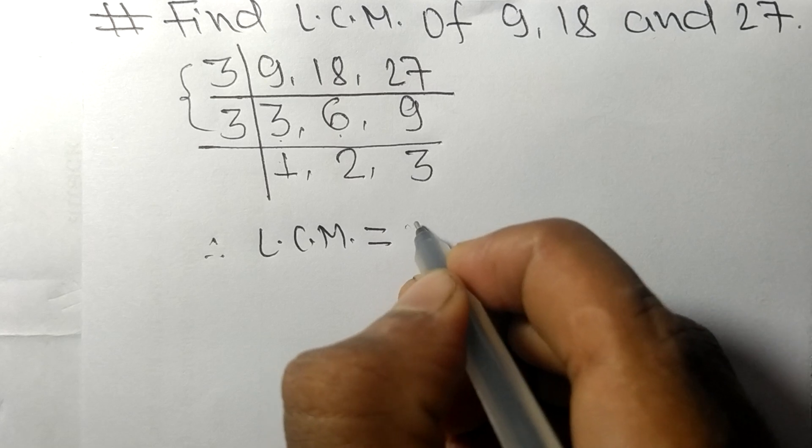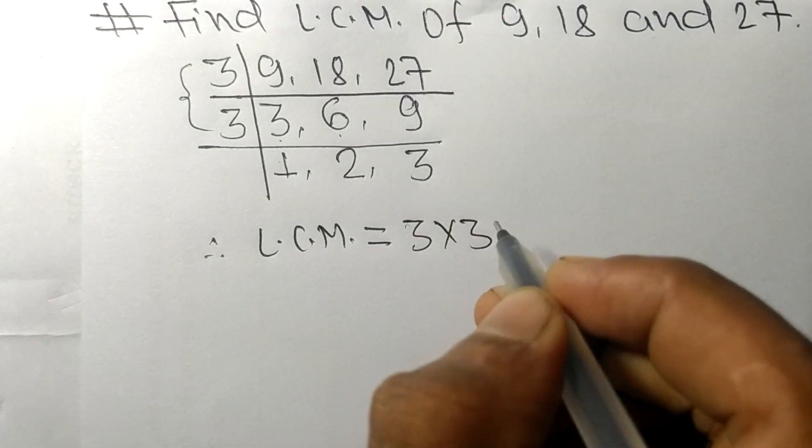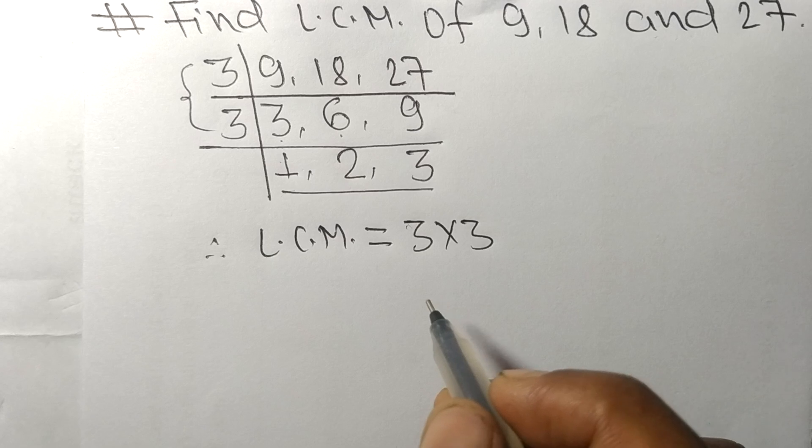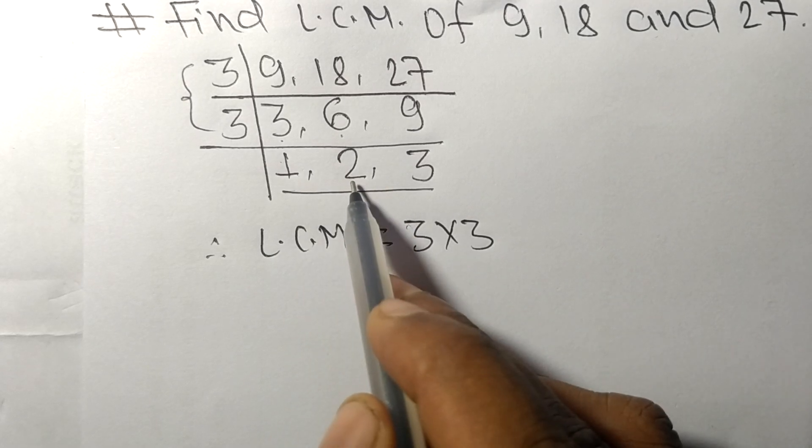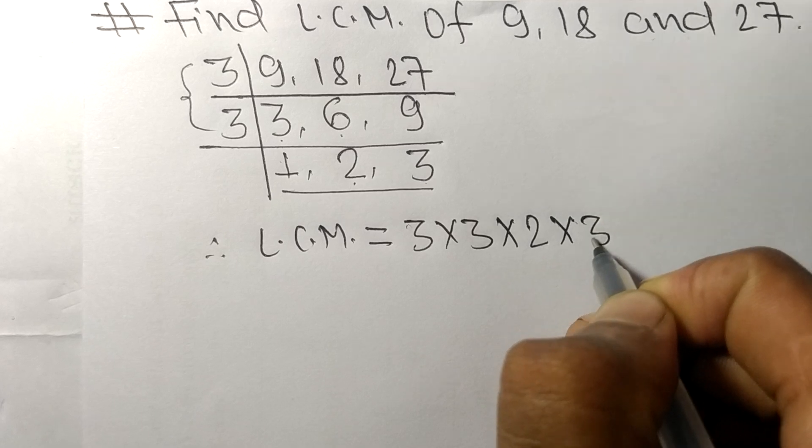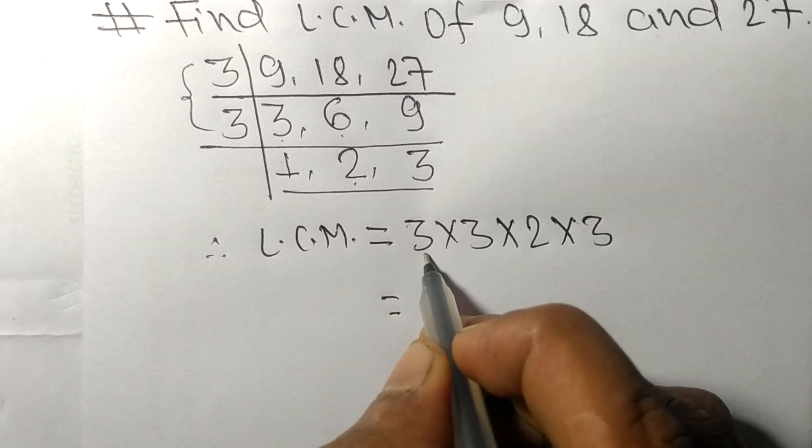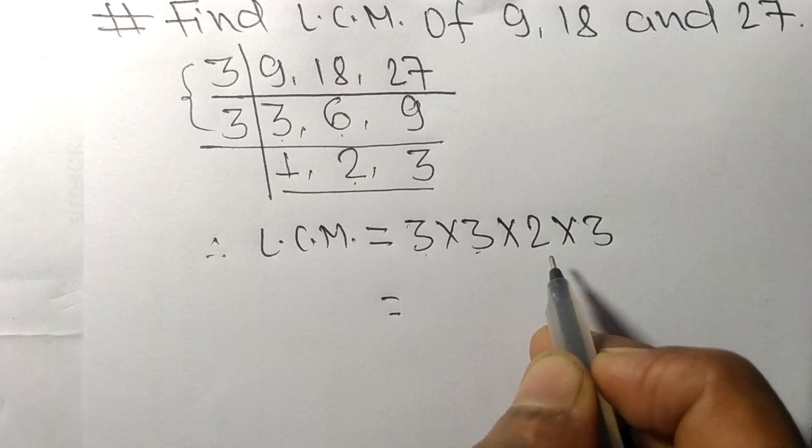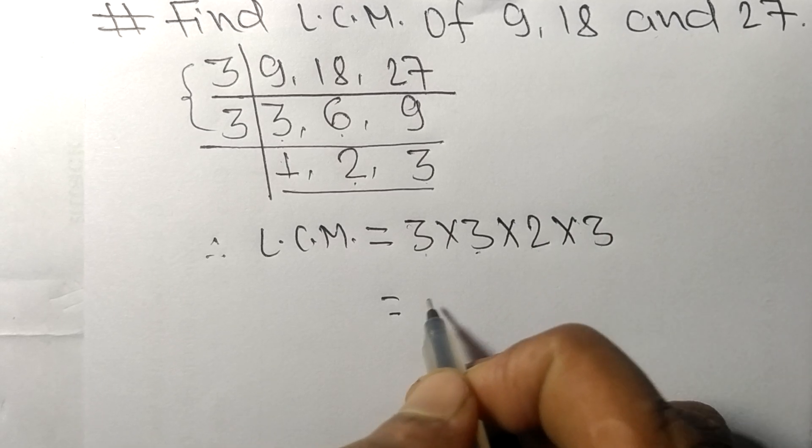from this side it is 3 times 3. From this side we choose the numbers greater than 1, that is 2 and 3. So 2 and 3, 3 times 3 means 9, 9 times 2 means 18, 18 times 3 means